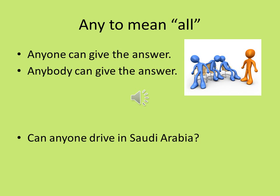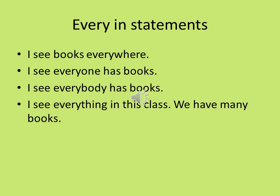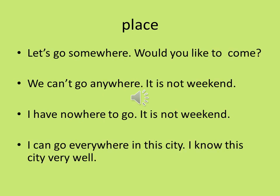Can you answer this question? Can anyone drive in Saudi Arabia? Every is used in statements. I see books everywhere. I see everyone has books. I see everybody has books. I see everything in this class — we have many books. To talk about place, we use -where. Everywhere means every place. Nowhere means no place. Anywhere means any place. Somewhere means some place.